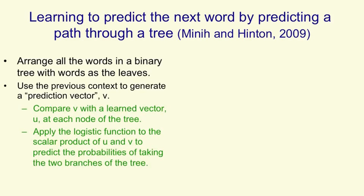And that will give us the probability of taking the right branch in the tree. And one minus that gives us the probability of taking the left branch in the tree.